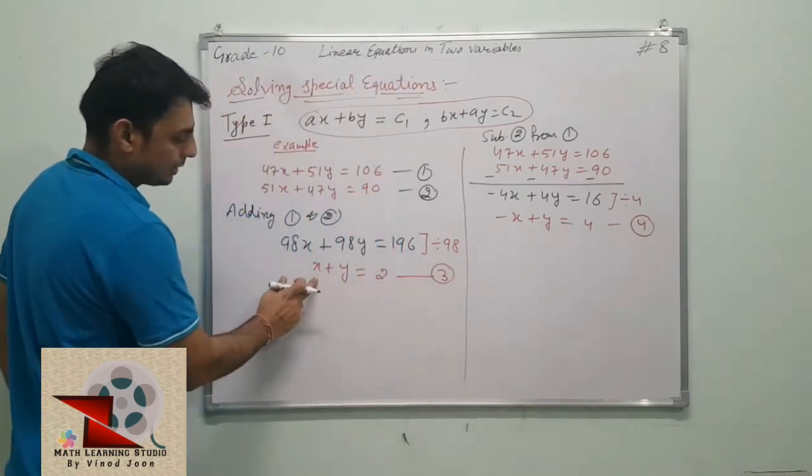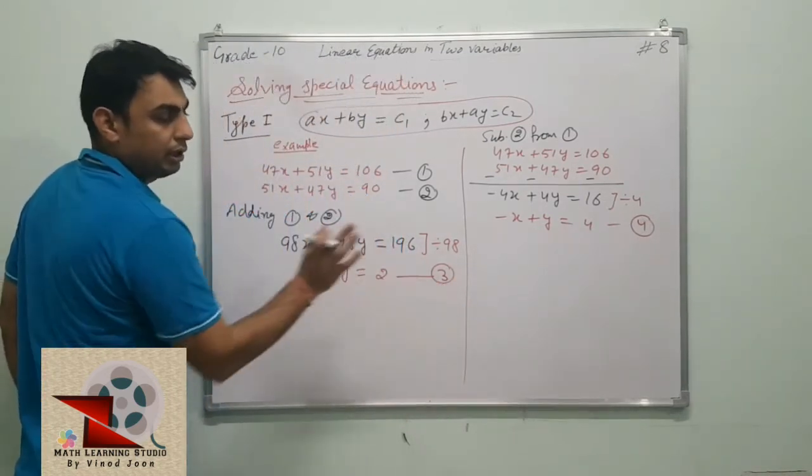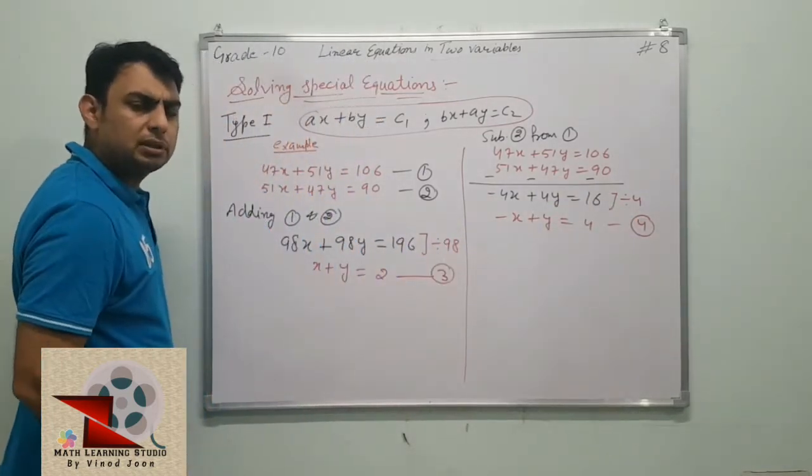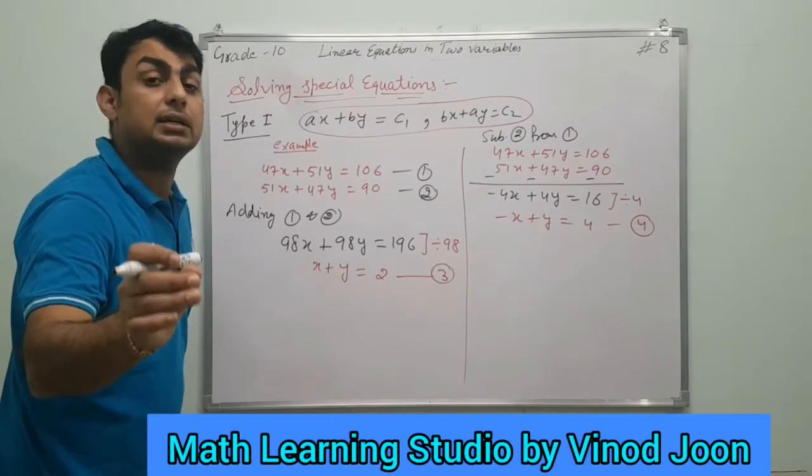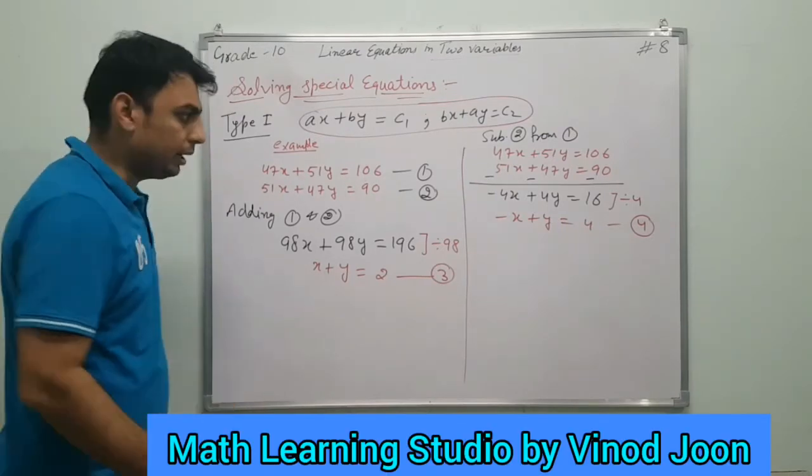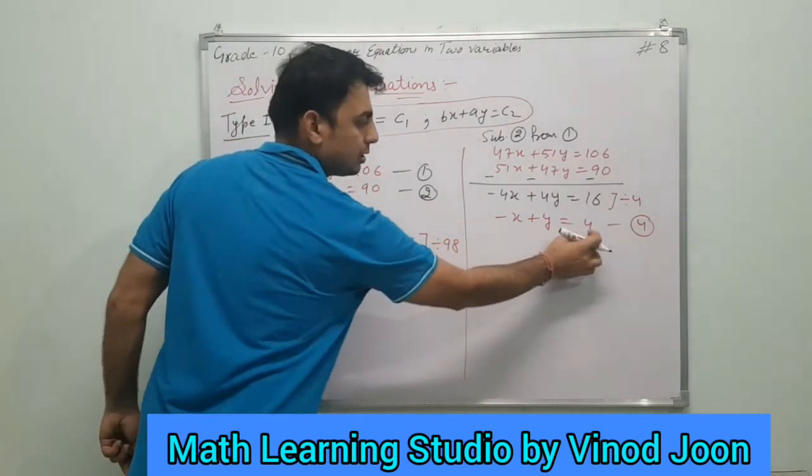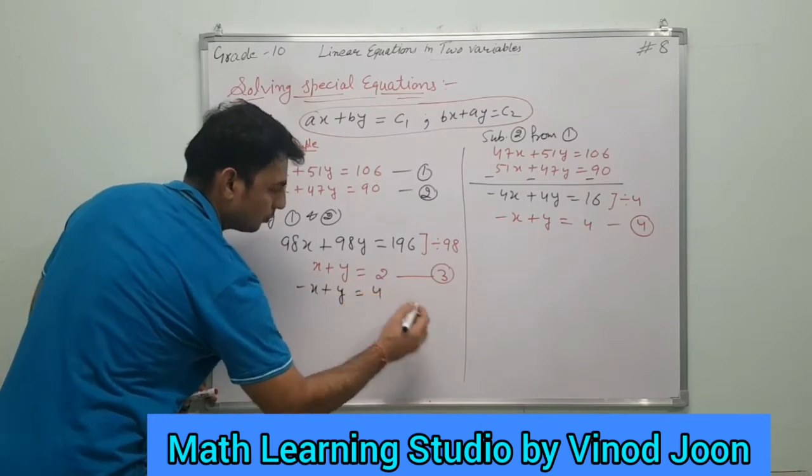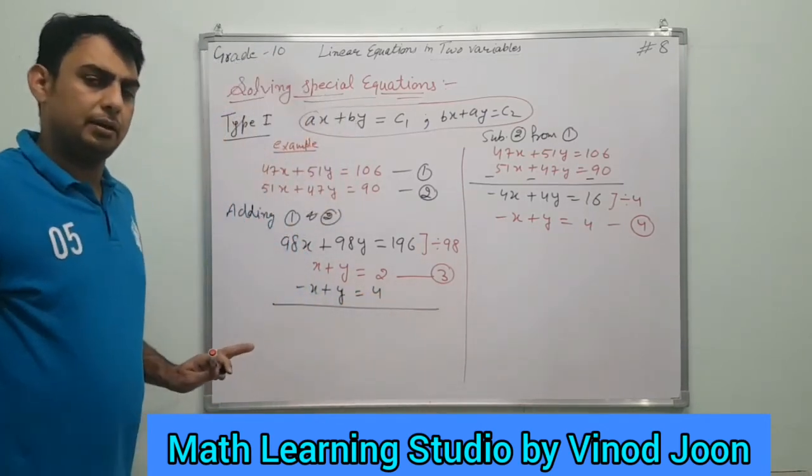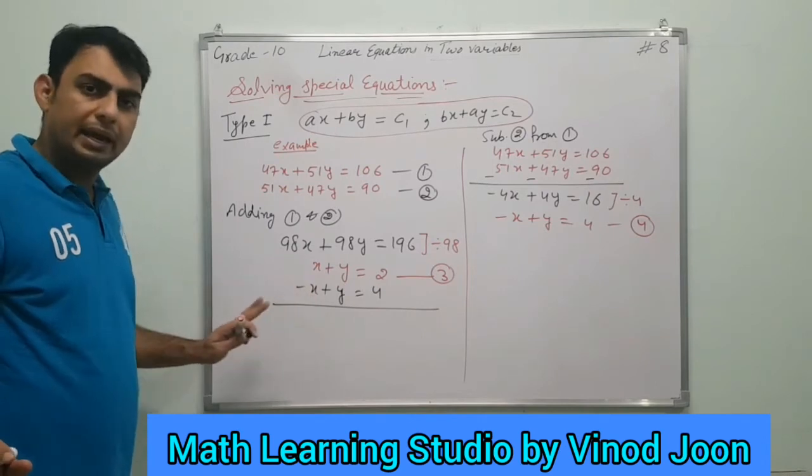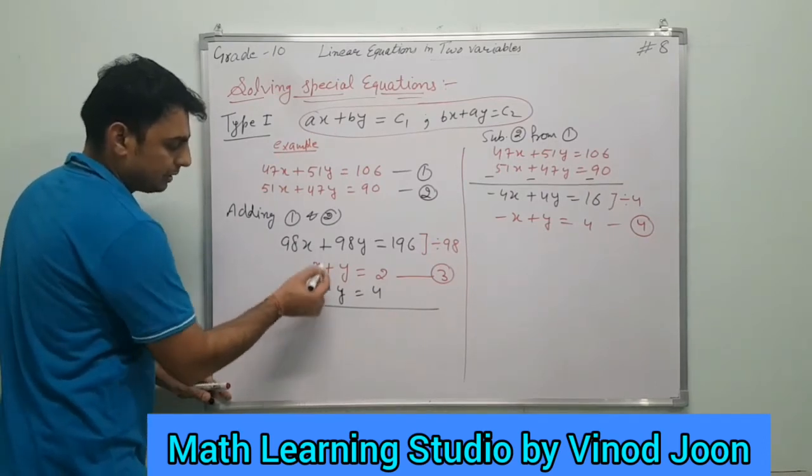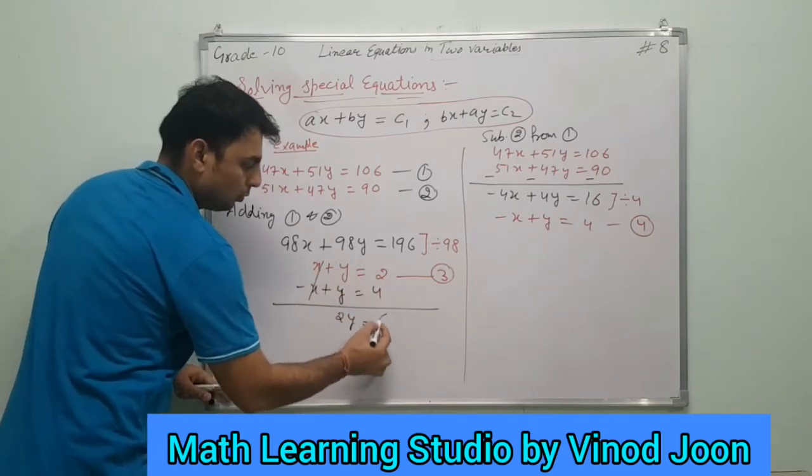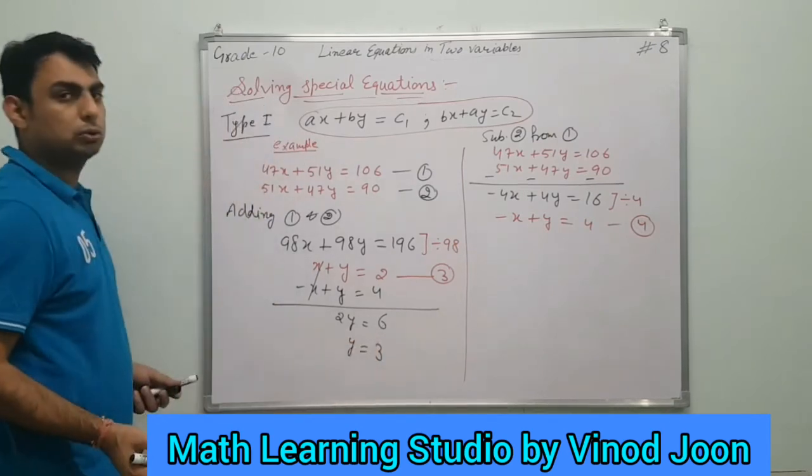Now we can see x + y = 2 is equation 3, and -x + y = 4 is equation 4. Which method will be easiest? Elimination, that is equating the coefficient method. So -x + y = 4. We can simply add equations 3 and 4. x minus x cancels, y plus y is 2y, 2 plus 4 is 6. Therefore 2y = 6, so y = 3. Very simple.